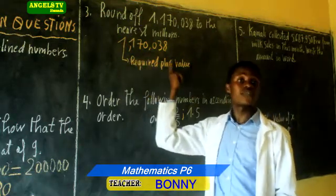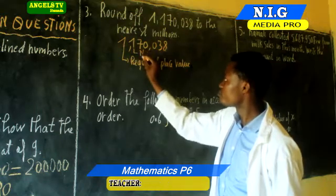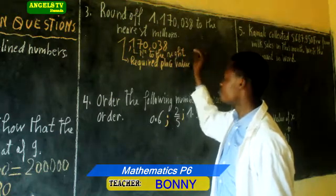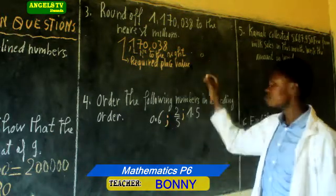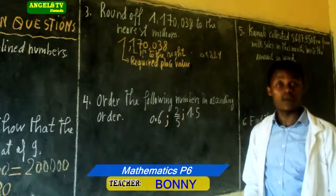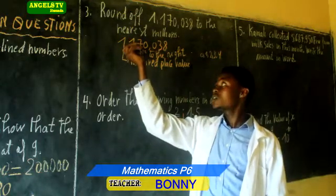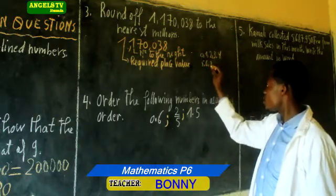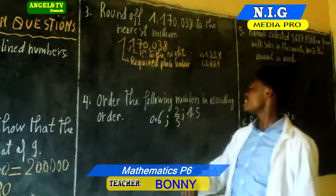After identifying the required place value, next we find the number to the right. The number to the right of this required place value is 1. When the number to the right is 0, 1, 2, 3, or 4, we round it down by adding 0 on this number. When it is 5, 6, 7, 8, or 9, we round it up by adding 1 on the required place value. Here the number to the right is 1, so we round it down.